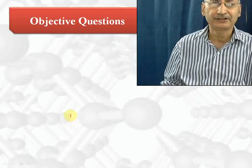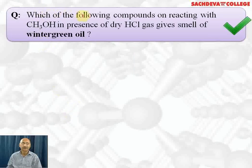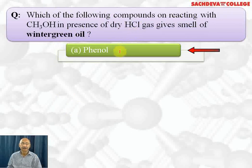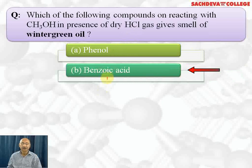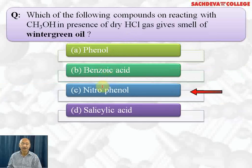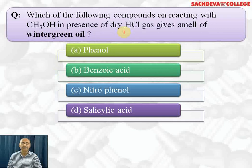Let's take objective questions based on phenol. First question: which of the following compounds, on reacting with methyl alcohol in the presence of dry HCl gas, gives the smell of wintergreen oil? Options are phenol, benzoic acid, nitrophenol, and salicylic acid. The correct answer is salicylic acid. Salicylic acid reacts with methyl alcohol in the presence of dry HCl gas, which acts as a dehydrating agent, resulting in the formation of methyl salicylate, which is used as a muscular pain reliever and is a component of pain relief balms.